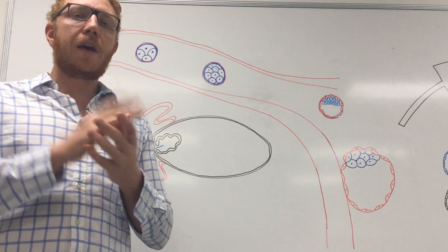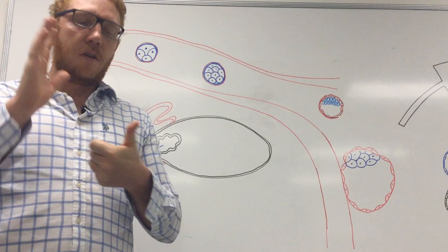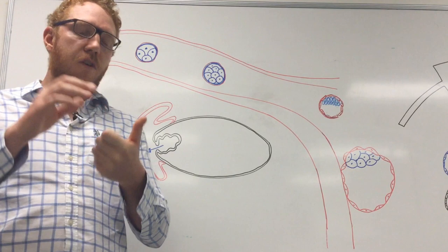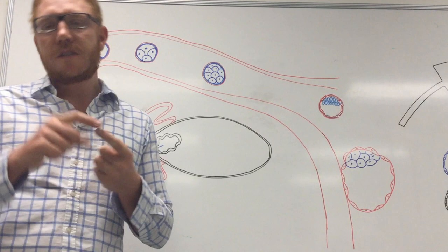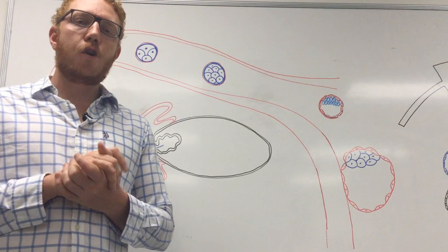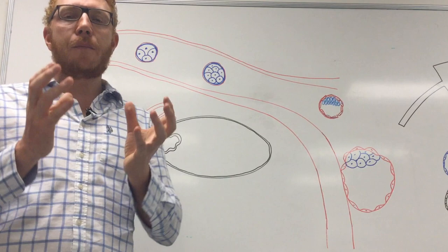There are three main learning outcomes for today, broken into the first three weeks. The first outcome covers processes in the first week: fertilization, cleavage, and implantation. The second learning outcome is the second week: further implantation and bilaminar formation. The third outcome covers the third week: gastrulation and how the embryo starts to fold.